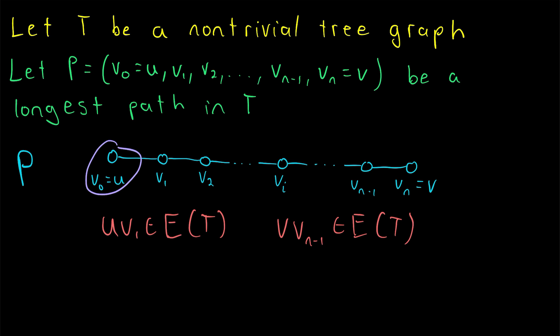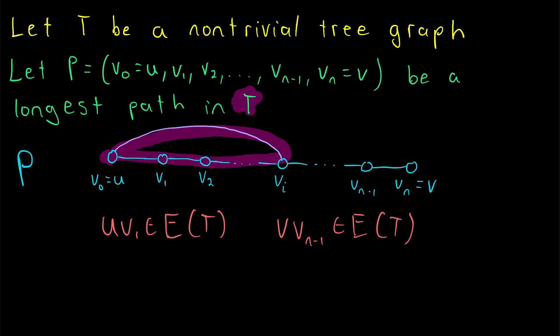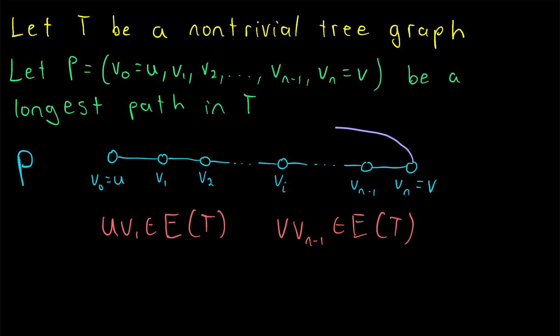What about the other possibility? Could U or V have any other neighbors on the path P? Any other neighbors besides V1 for U and Vn minus one for Vn? The answer again is certainly not. If, for example, the vertex U is adjacent to some vertex Vi on the path other than V1, what do we get? You see it clear as day, we get a cycle, which contradicts T being a tree. This would be a cycle in a tree graph, which contradicts the definition of tree graph. And of course, the same problem exists if V is adjacent to some vertex Vi on the path other than Vn minus one. We immediately get a cycle, which is a contradiction, because this path exists in a tree graph.